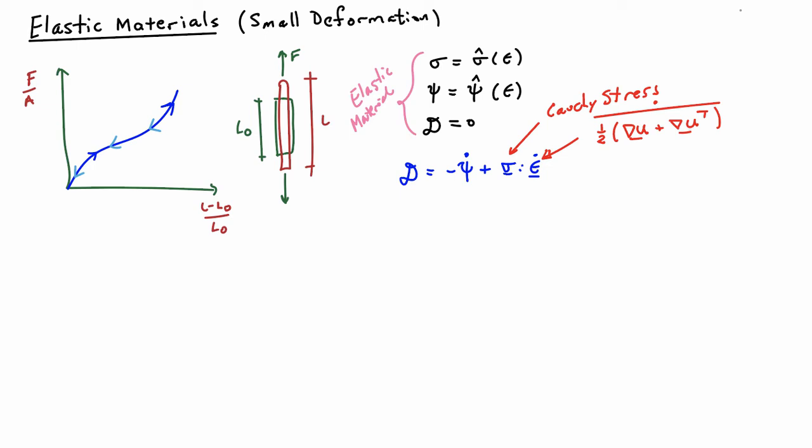Now the dissipation here, I want to be equal to zero. So let me go ahead and first compute what the time rate of change of the free energy is, and then we'll plug that in and set it equal to zero and see what the consequence is.